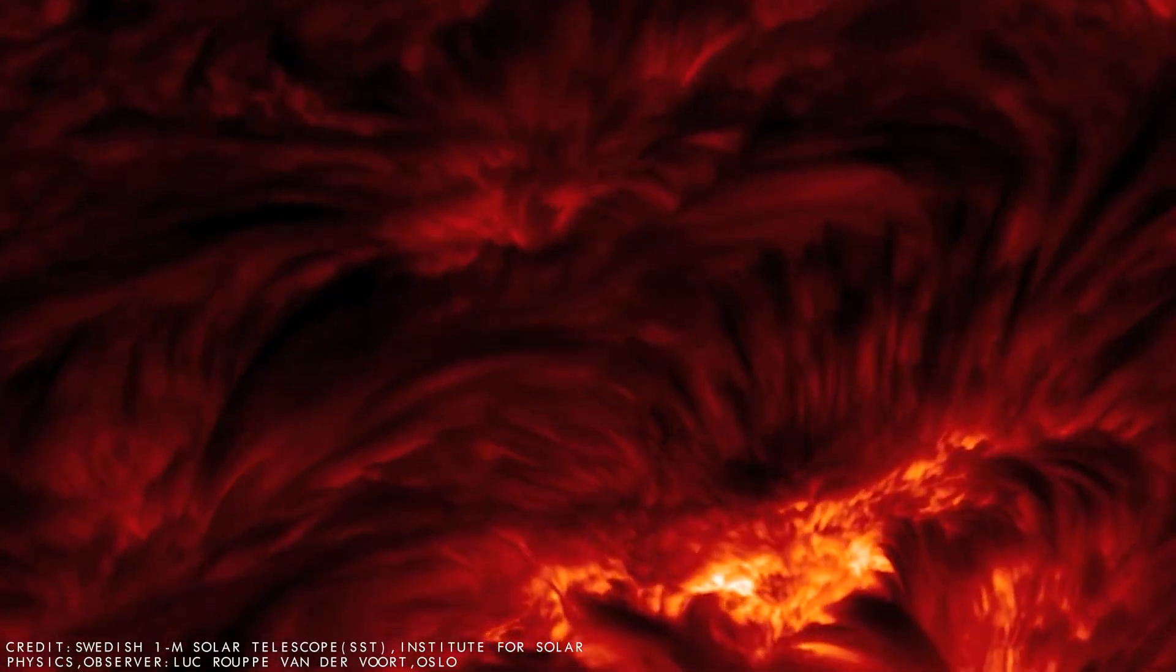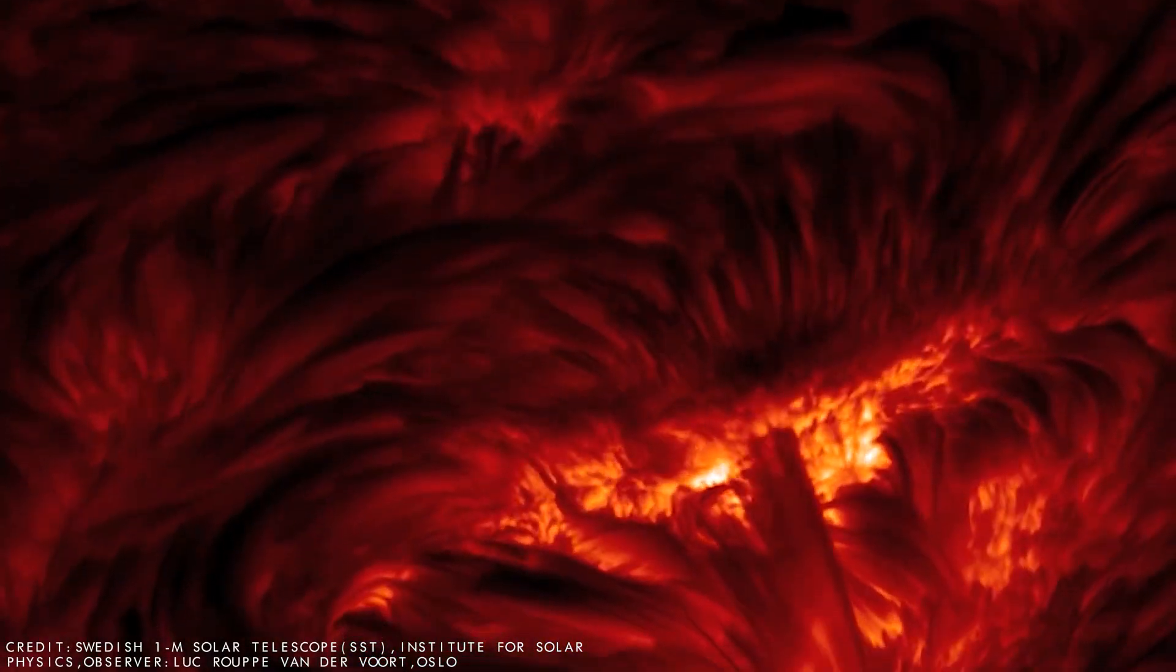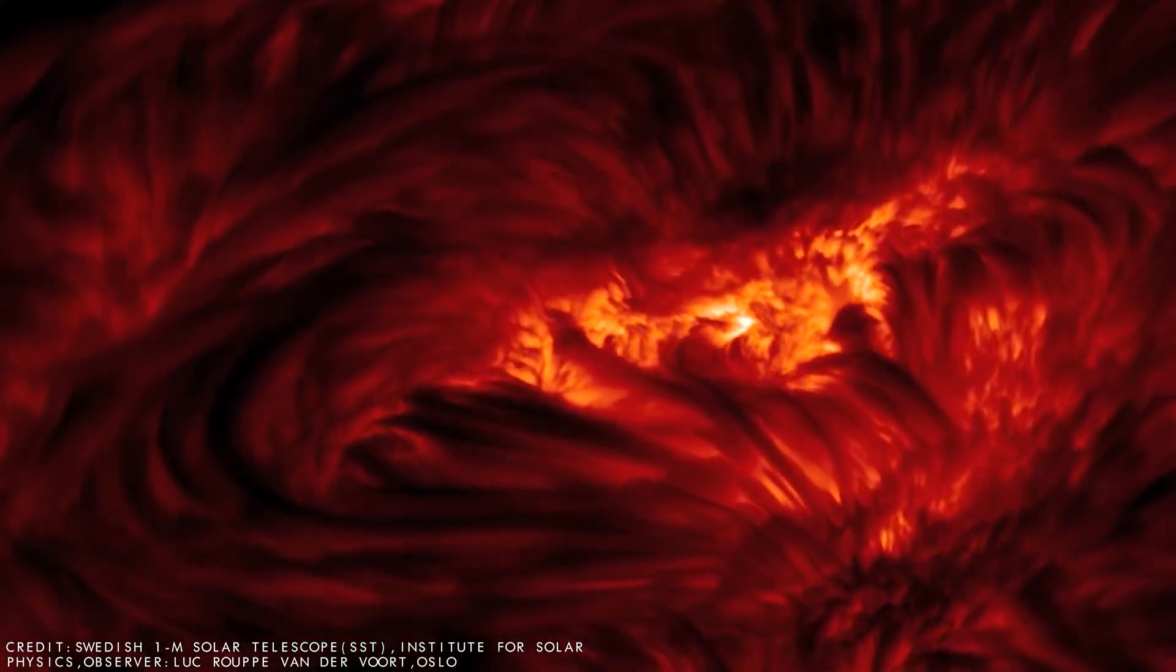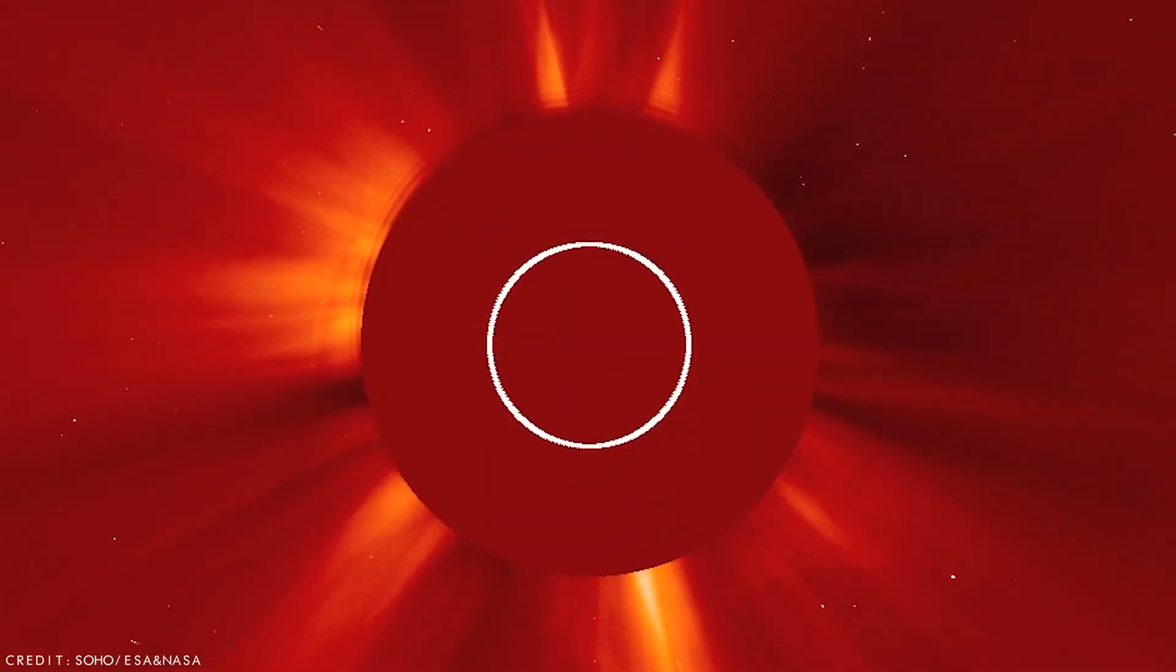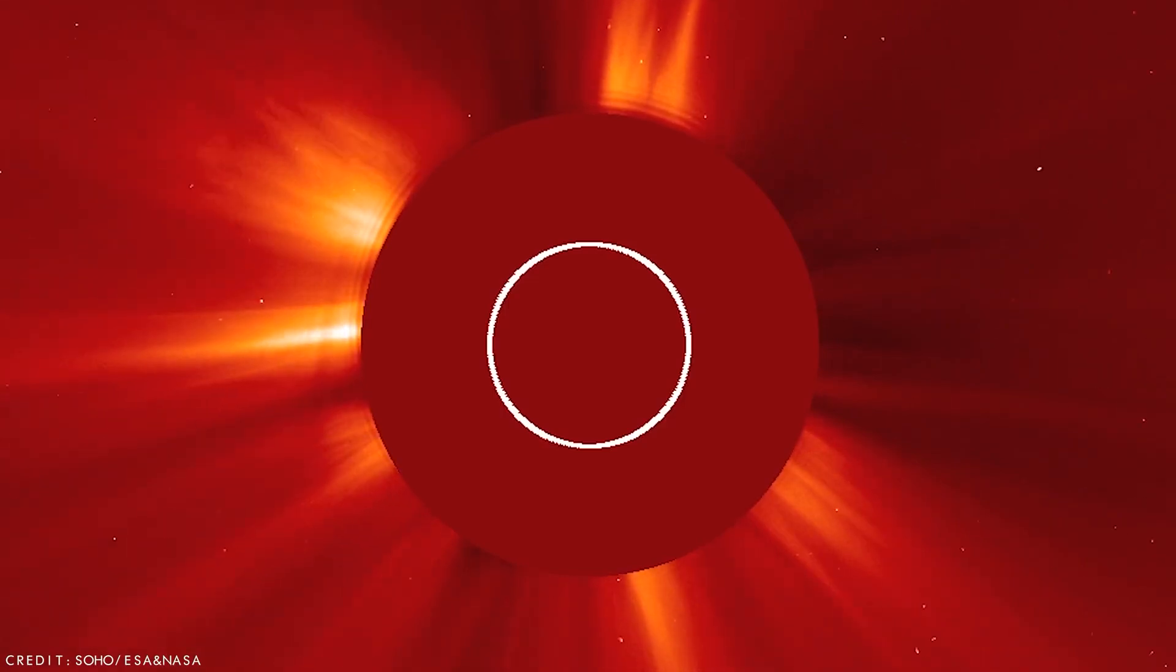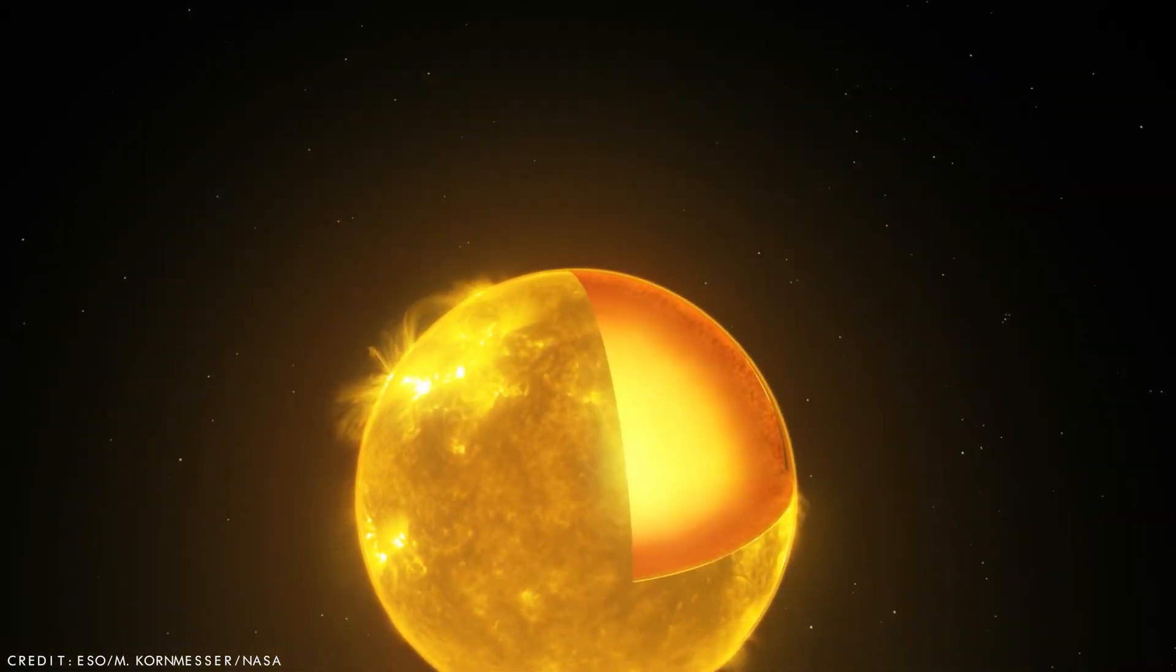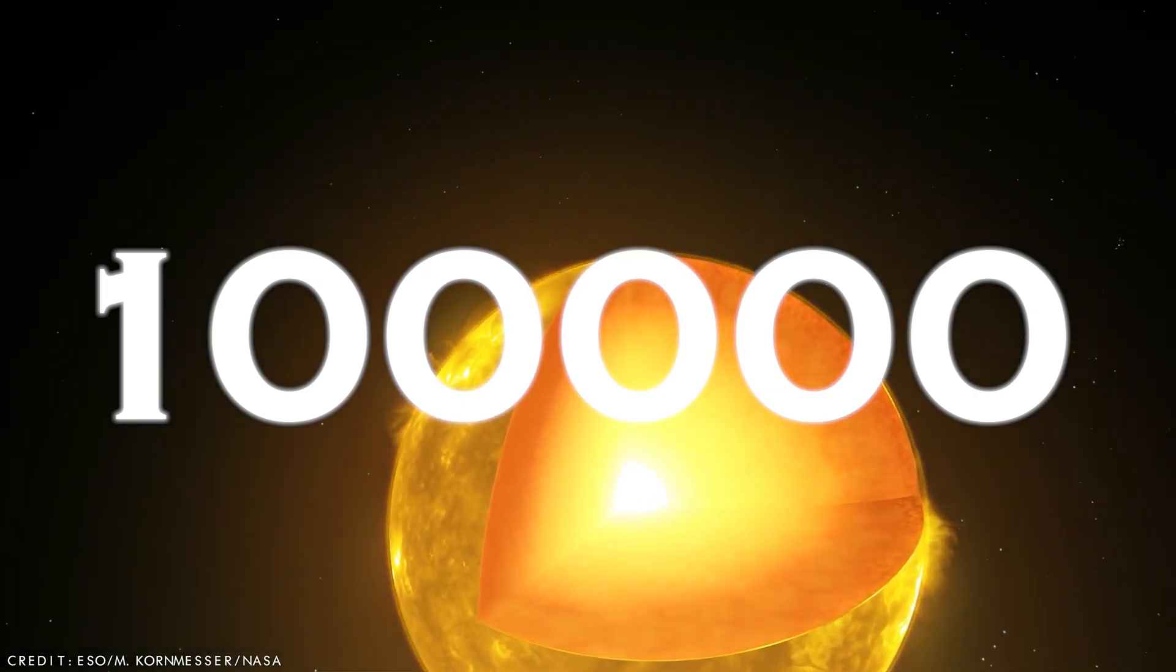Although some estimates place Betelgeuse farther away, it could be as close as 724 light years from Earth. Determining the distances of red supergiant stars like Betelgeuse remains a challenge for astronomy, because of its great distance and peculiar characteristics. Betelgeuse is one of the brightest stars in the night sky, being about 100,000 times more luminous than the sun.